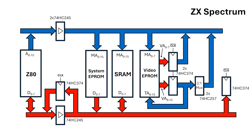The trick to getting all this to work is this Octal D-type flip-flop, which makes the data going into the Z80 persist while CPU clock bar is low.